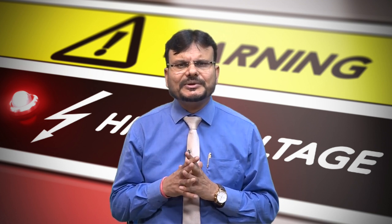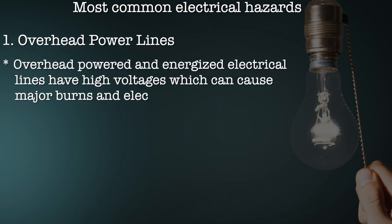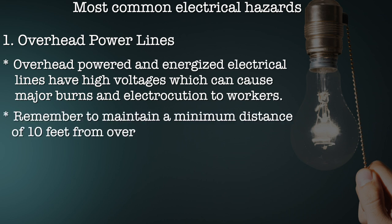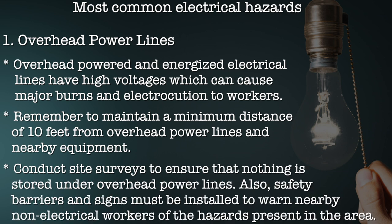Here are some of the most common electrical hazards in the workplace and tips on how these risks can be mitigated. The first one is overhead power lines. Overhead energized electrical lines have high voltage which can cause major wounds and electrocution to workers. Remember to maintain a minimum distance of 10 feet from overhead power lines and nearby equipment. Conduct site surveys to ensure nothing is stored under overhead power lines.